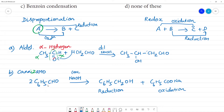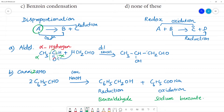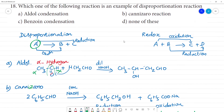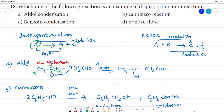One aldehyde — benzaldehyde — undergoes reduction to give benzyl alcohol (C6H5CH2OH), and the other undergoes oxidation to give sodium benzoate. So reduction and oxidation take place in the same compound in the same reaction — we call this disproportionation reaction. So the answer is Cannizzaro reaction.